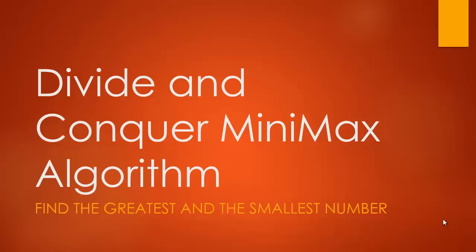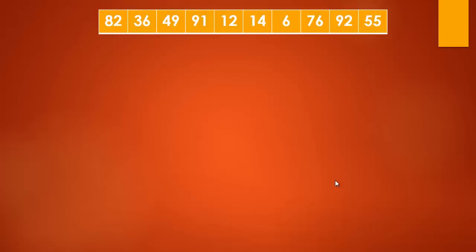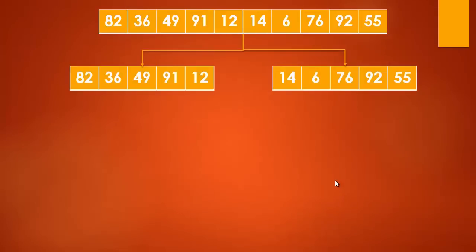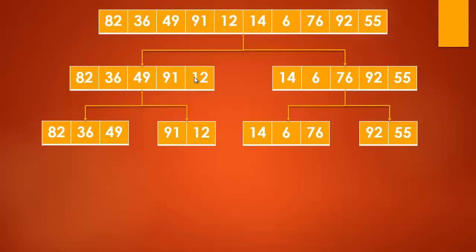Let's get into the algorithm and see how this program actually works. We have elements like 82, 36, 49, 91 - a bunch of elements in the array. The first step is to bifurcate - we are dividing and conquering, so first we divide everything. We divided them into five and five each. Since this is a five-length array, we need to bifurcate into either three or two, because you can't split an odd number exactly in half. What we're looking for is to make the smallest possible binary combinations - pairs of two.